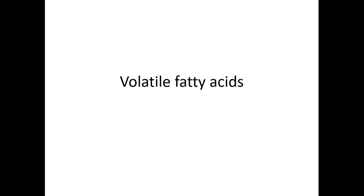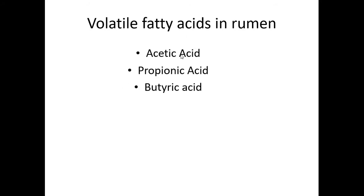Today we'll talk about volatile fatty acids. These are short-chain fatty acids which are highly volatile, like acetic acid and butyric acid. The three volatile fatty acids are acetic acid, propionic acid, and butyric acid. Acetic acid is a two-carbon fatty acid, propionic acid is a three-carbon fatty acid, and butyric acid is a four-carbon fatty acid. These fatty acids are produced in the rumen from glucose.